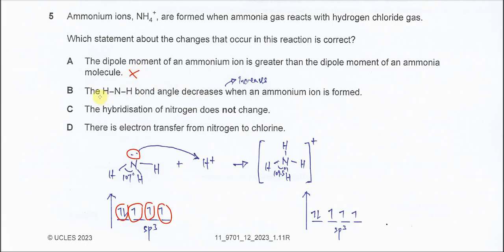For B, the H-N-H bond angle means this one. Decreased when ammonium ions form. So the H-N-H bond angle is actually increased from 107 to 109.5. Therefore, this one is also wrong.